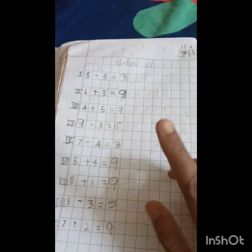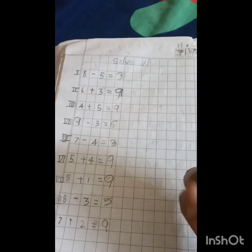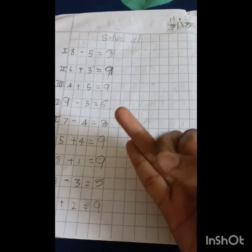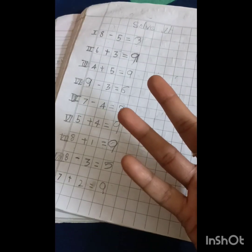4 plus 5. You should always keep the biggest number in mind and the smallest in ants. It will be easy. So, 5 in the mind and 4 in ants. 5 next what? 6, 7, 8, 9. 9 minus 3. 9 in the mind and 3 in ants. You should go in reverse. So, before 9 what?